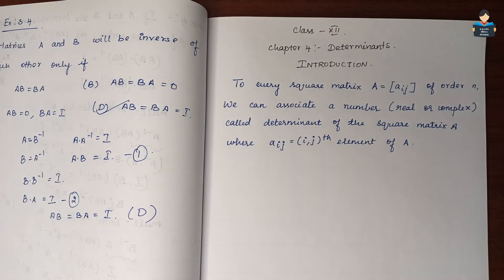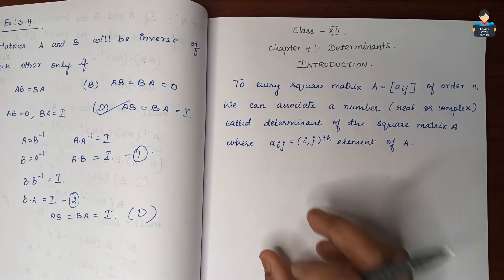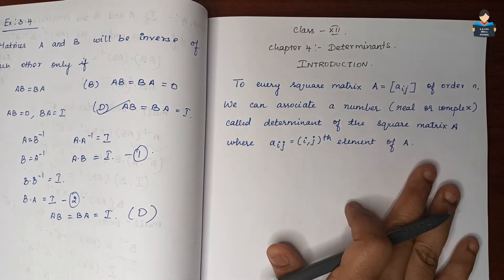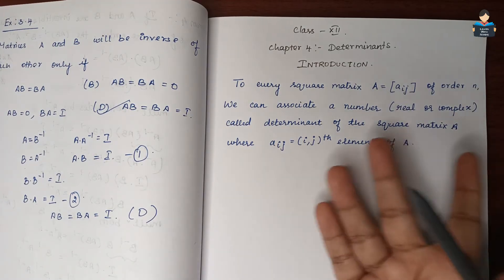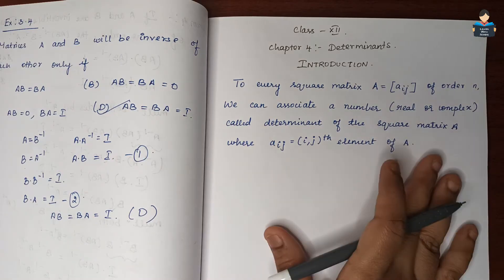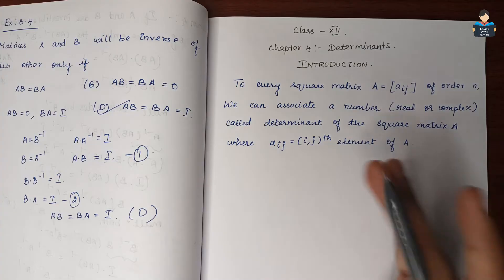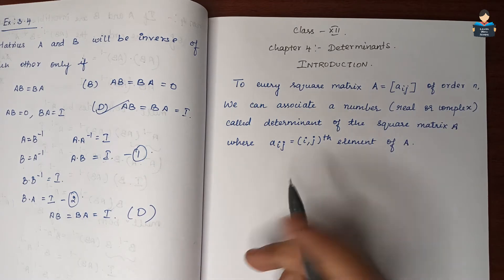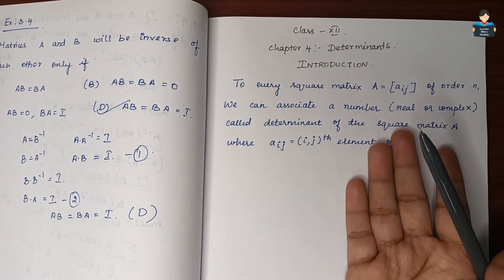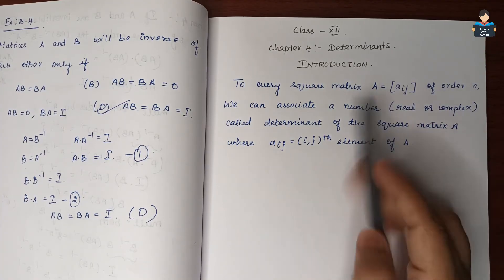Hello everyone, welcome to our channel. In this video, Class 12 Chapter 4: Determinants Introduction. In the last chapter on matrices, we covered how to add two matrices, subtract two matrices, multiplication of matrices, inverse of matrix, division in the matrix, elementary transformation. Now we will see the other method, that is Determinants.